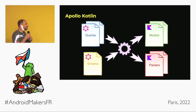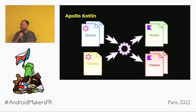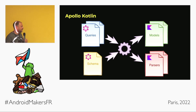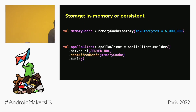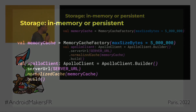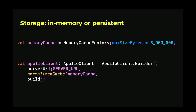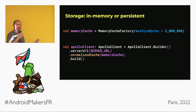One thing the library provides as an optional dependency is an implementation of the normalized cache as explained. To use it, you declare your cache — in this case an in-memory version — set it on your client, and from that point on any query you do will go through the cache.